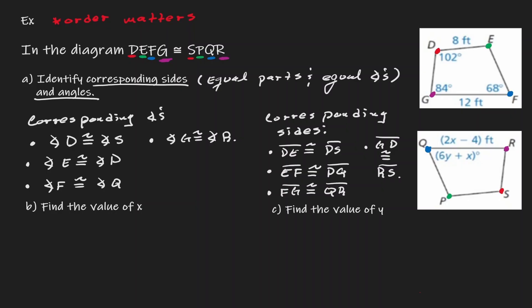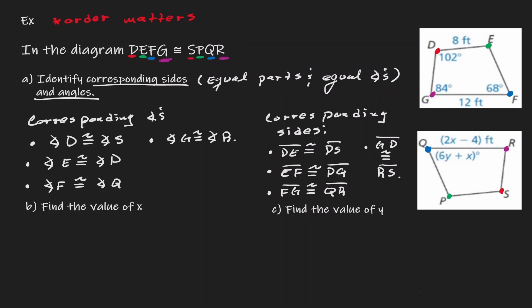This is how we can identify corresponding sides and corresponding angles by looking at the way that we are stating the congruency among those two objects. And now that we know which angles and sides are congruent to each other, we can start doing some algebra within the statements.